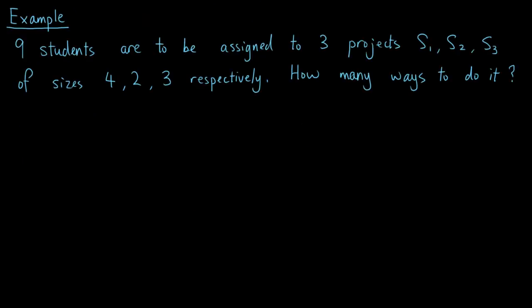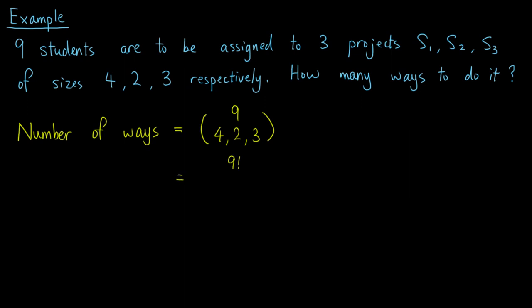Let's look at an example. Suppose 9 students are to be assigned to 3 projects S1, S2, and S3 of sizes 4, 2, and 3 respectively. In how many ways can we do this? Well, the number of ways is exactly the number of ordered partitions of the 9 students into 3 subsets of sizes 4, 2, and 3. This equals 9 factorial divided by the product of 4 factorial, 2 factorial, and 3 factorial. The answer is 1260.